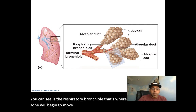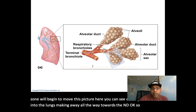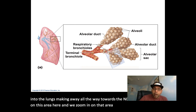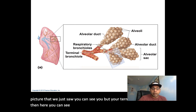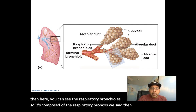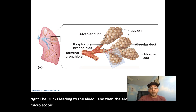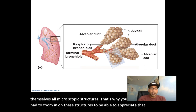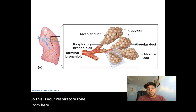Looking at this picture, you can see as you come all the way into the lungs toward the ending, you can appreciate the terminal bronchioles, then the respiratory bronchioles. The respiratory zone is composed of the respiratory bronchioles, then the alveolar ducts — the ducts leading to the alveoli — and then the alveoli themselves. All are microscopic structures, which is why we need to zoom in to appreciate them.